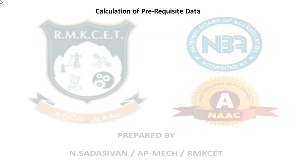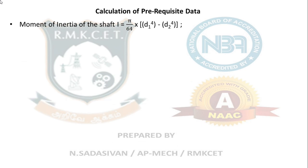First, I am going to calculate the moment of inertia. For a hollow shaft, the moment of inertia formula is π/64 × (external diameter⁴ − internal diameter⁴). Do not apply the power 4 on the outside of the bracket — it is entirely wrong. Apply power 4 for each diameter separately and then subtract.